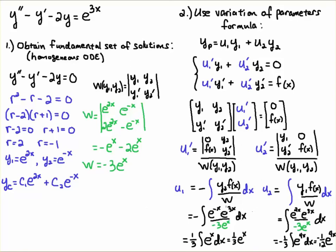Now we simplify. For u1: e^(2x) divided by e^x gives e^x; the integral of e^x is e^x; the minus-minus gives a positive, so u1 = (1/3)e^x. For u2: e^(5x) divided by e^x gives e^(4x); the integral of e^(4x) is (1/4)e^(4x); multiplying by -1/3 gives u2 = -(1/12)e^(4x). You can verify these by u-substitution. That gives us u1 and u2.